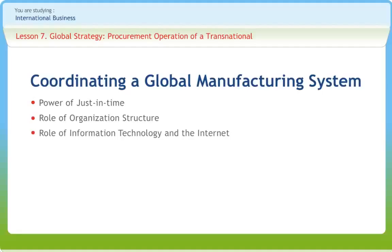Web-based information systems play a crucial role in modern materials management by tracking component parts as they make their way across the globe toward an assembly plant. Information systems enable a firm to optimize its production scheduling based on when components are expected to arrive, by locating component parts in supply chains. Good information systems allow the firm to accelerate production when needed by pulling key components out of the regular supply chain and having them flown to the manufacturing plant.